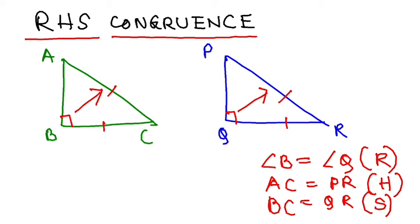So basically, I have right angle, I have the hypotenuse, and I have the side. So by RHS, these two triangles ABC and triangle PQR, these two are congruent by which rule? RHS rule.